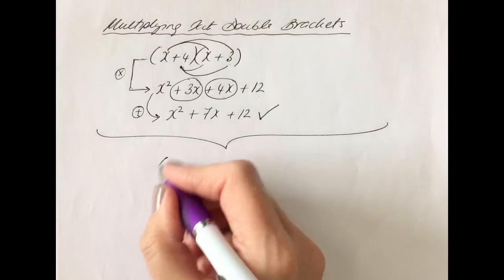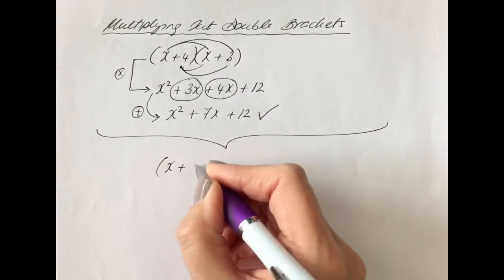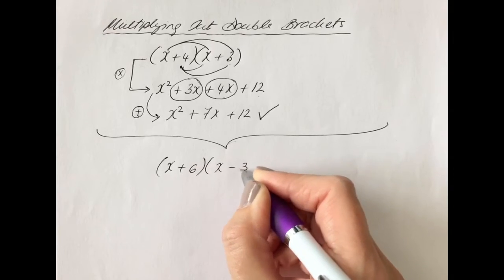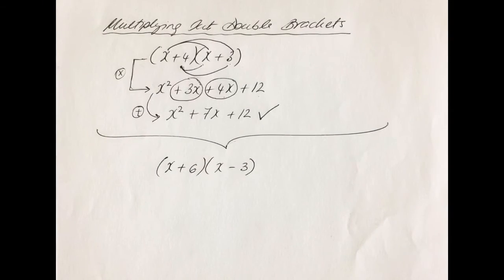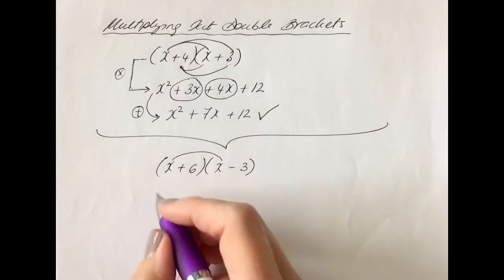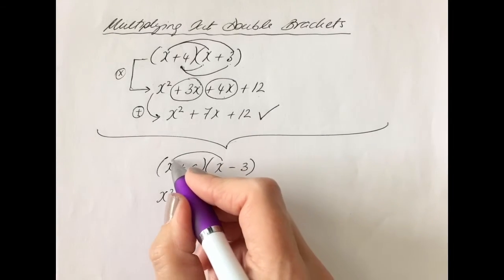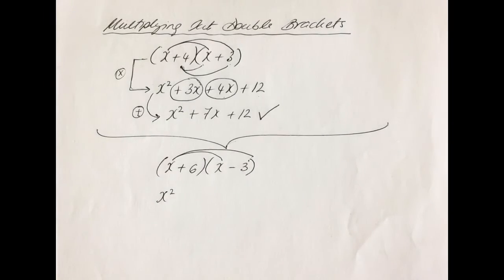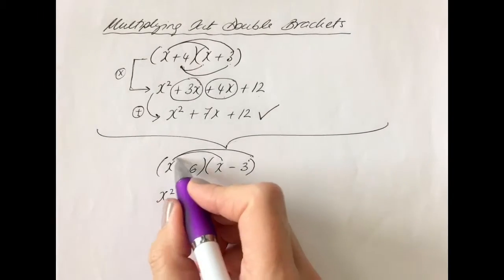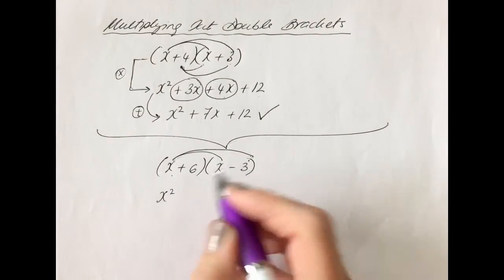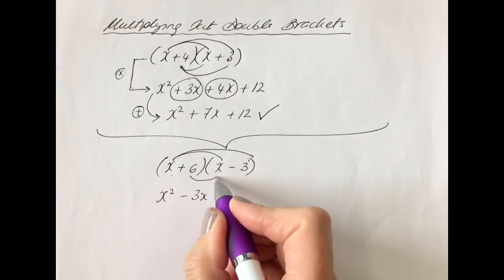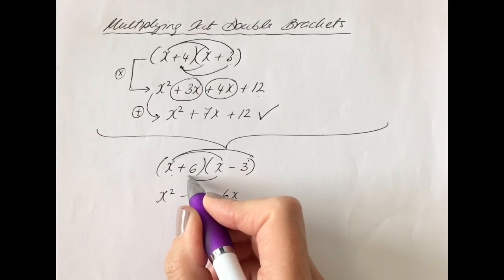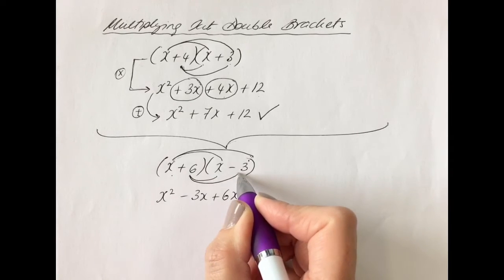Let's try another question. Let's say you had x plus 6 in one bracket and x minus 3 in the other. Here we've got to multiply the x by the x, we get x squared. Now we're going to multiply the x by the minus 3, so x times minus 3 is minus 3x. 6 times x is positive 6x.